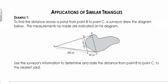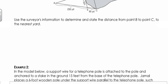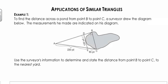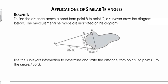It says that a surveyor, in order to find the distance across a pond from point B to C, is going to draw the picture shown in the diagram. The measurements he makes are indicated on the diagram. They want us to use the surveyor's information and measurements to determine the distance from point B to point C, rounded to the nearest yard. So I'm going to label that unknown distance X in my picture.